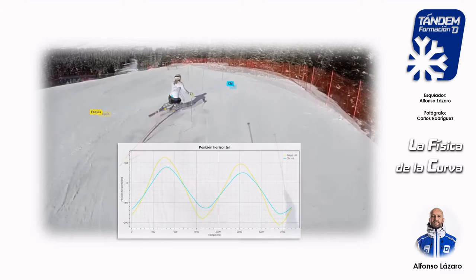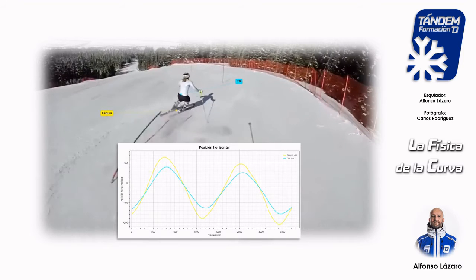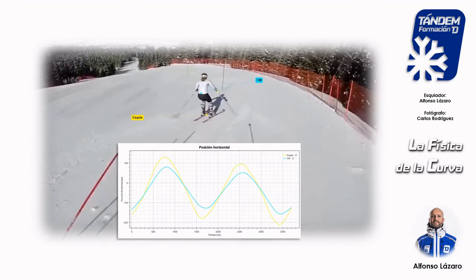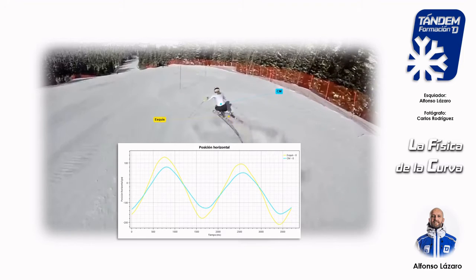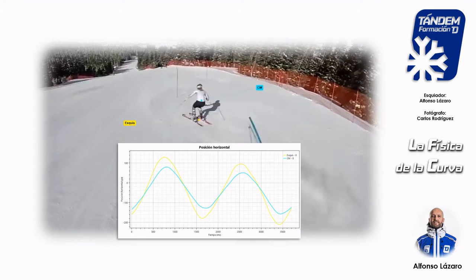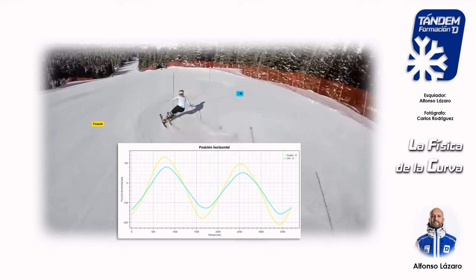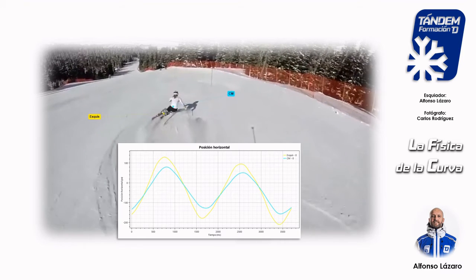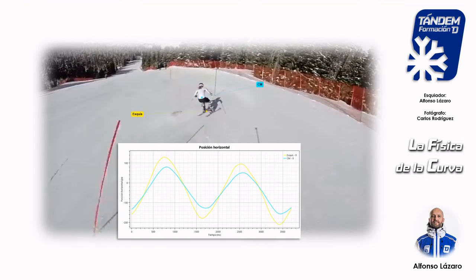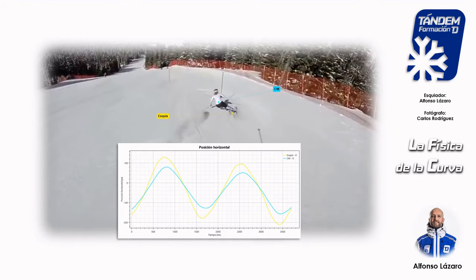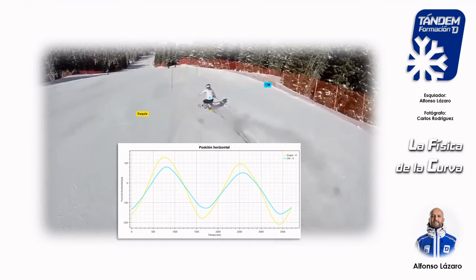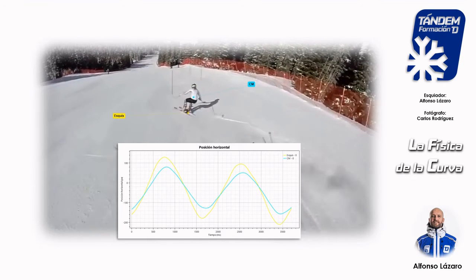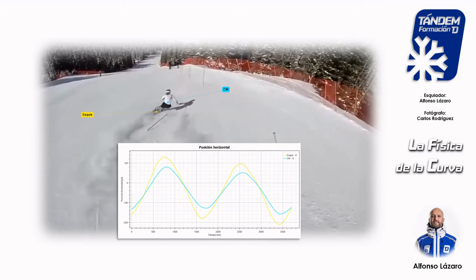Como sabemos, la velocidad del esquiador no varía de forma constante, ni en módulo, ni en dirección, ni en sentido. Tampoco lo hace, por tanto, la aceleración, siendo un movimiento con aceleración variada o no constante. De ahí la dificultad para encontrar en muchas ocasiones la estabilidad deseada.